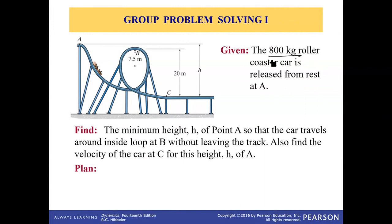So find the minimum height h of point A so that the car travels around the inside the loop without leaving the track. Also find the velocity of the car at C for this height h of A. So we need to calculate this and we need to calculate velocity at C.